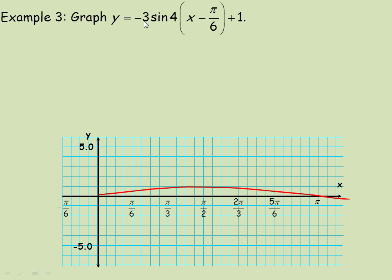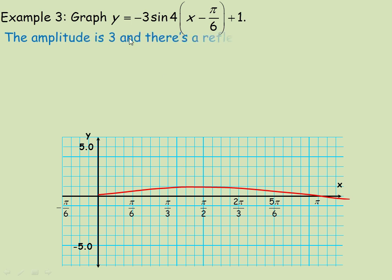In example three, we graph y equals negative 3 sine of 4x minus pi over 6, plus 1. The number in front of the sine is negative 3. Three is still the amplitude, but the negative means the graph has been reflected in the x-axis — it's upside down compared to the regular sine function. All the y-values have been multiplied by negative 3, so they're three times as big but with the opposite sign.